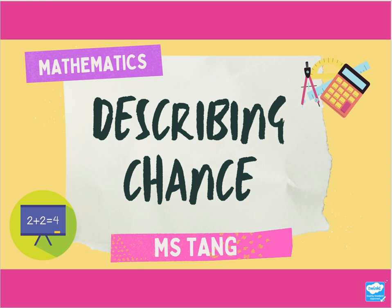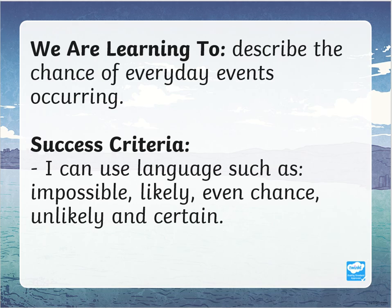Hi everyone, this is Miss Tang and today we are going to be learning to describe chance — specifically the chance of everyday events that occur. The criteria for today is being able to use language such as impossible, likely, even chance, unlikely, and certain.